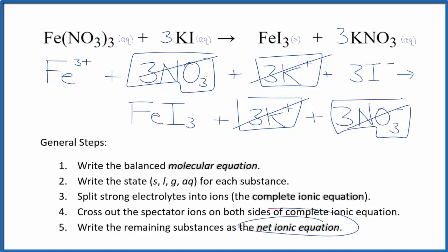What's left is the net ionic equation for Fe(NO3)3 plus KI. I'll clean this up and write the states. We'll have our net ionic equation.